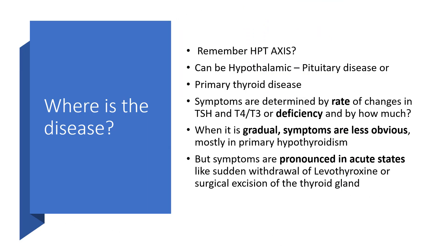Where is the disease? Remember the hypothalamic-pituitary-thyroid axis. It can be at the level of the hypothalamus, so it can be hypothalamic-pituitary disease, or it could be primarily within the thyroid itself, called primary thyroid disease. Symptoms are determined by the rate of changes in thyroid stimulating hormone, T3, T4, or determined by the depth of deficiency.